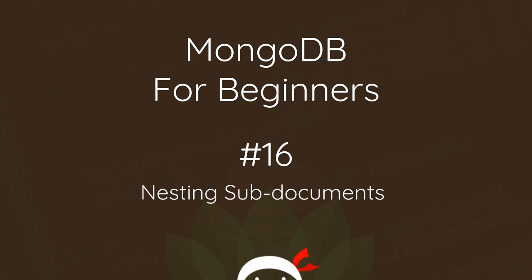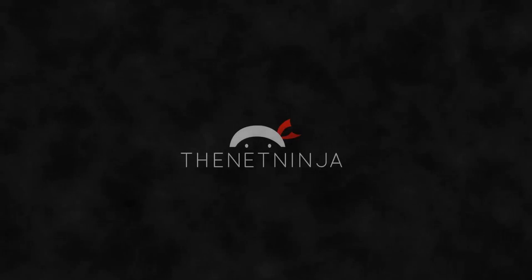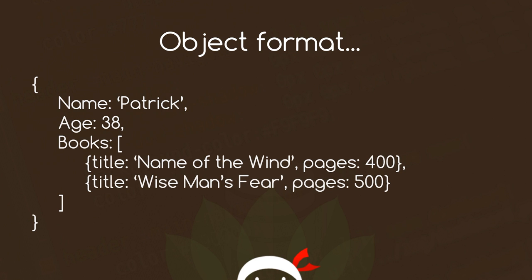Welcome to your 16th MongoDB for beginners tutorial. In this video I'm going to show you how we can nest sub-documents. In the last tutorial we created a model for our author, and that author model encompassed two schemas — one for the author itself with name, age, and books, and then within books we had a schema for the books themselves.